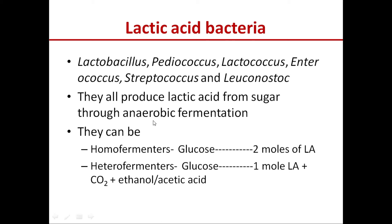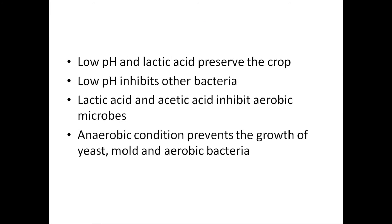Lactic acid bacteria can be of two types: homofermenters or heterofermenters. Homofermenters convert one glucose molecule into two moles of lactic acid. Heterofermenters convert one glucose molecule into one mole of lactic acid plus carbon dioxide and ethanol or acetic acid. For good quality silage we need more lactic acid, therefore homofermenters are better for silage making. More lactic acid causes the pH of the fodder to drop to 4 to 4.2, preserving the crop.